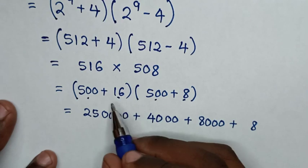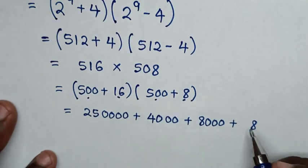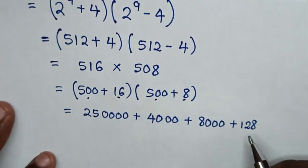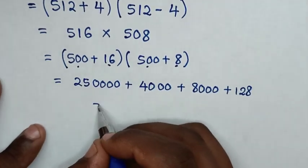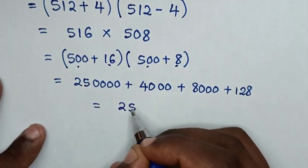Then 16 times 8: 8 times 6 is 48, and 8 times 1 is 8 plus the carry of 4 equals 12, giving us 128.